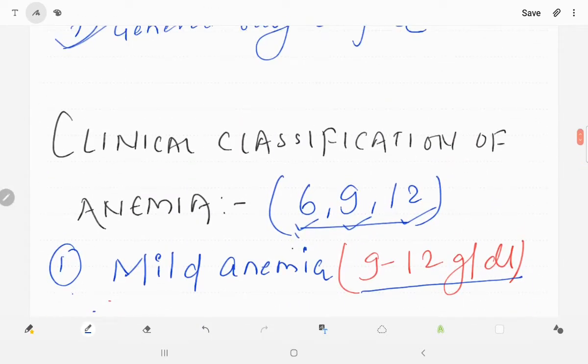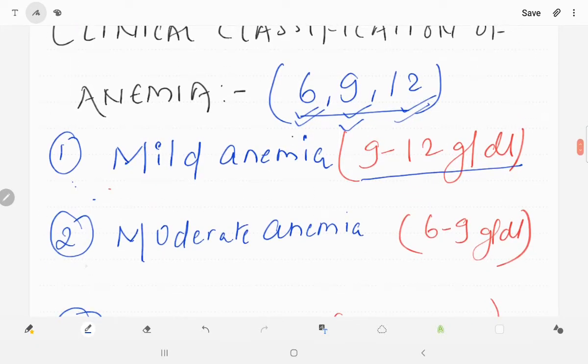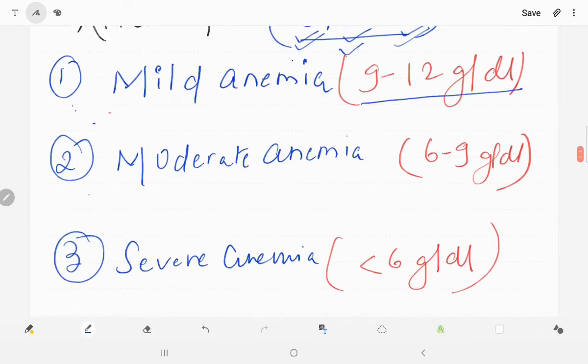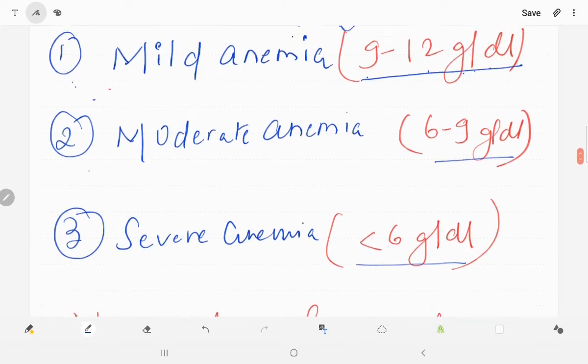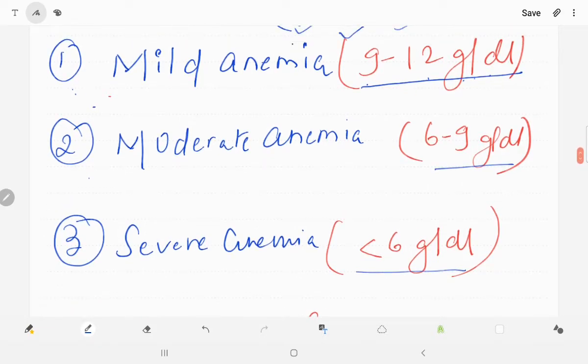So I told you to remember 6, 9, and 12. There is mild anemia, moderate anemia, and severe anemia. When the hemoglobin is 9 to 12 grams per deciliter it is mild anemia. When it is 6 to 9 grams per deciliter it is moderate. And when it is less than 6 it is severe anemia. So this is just clinical classification.